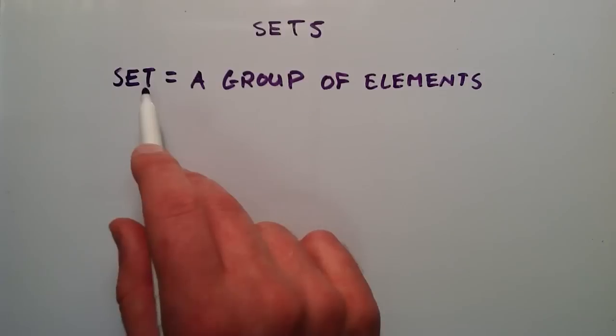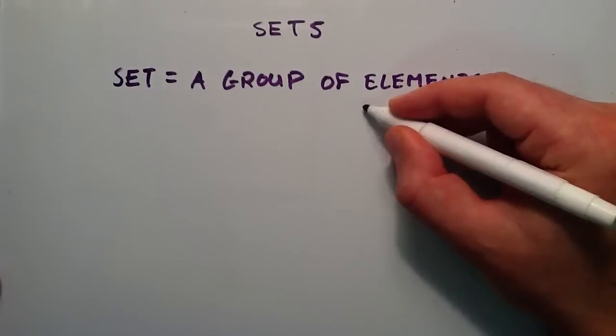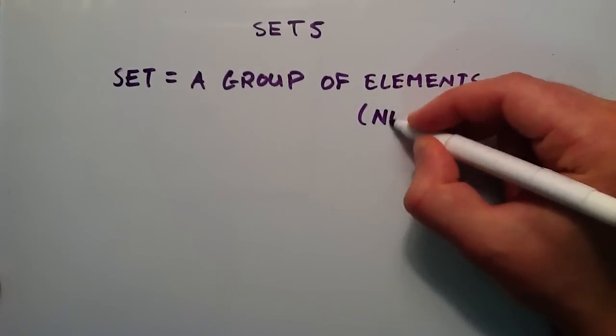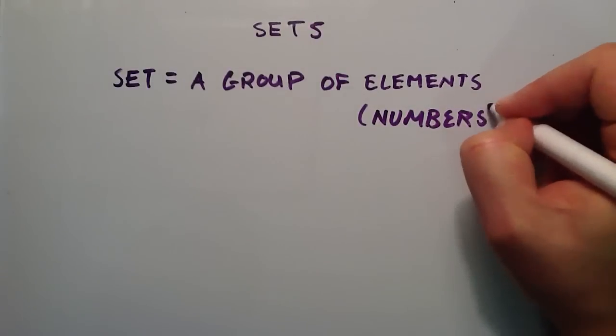A set is basically a group of elements. For our case in this tutorial, our elements are going to be numbers. So we'll just put numbers in parentheses here under elements.